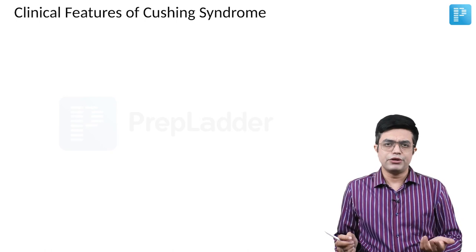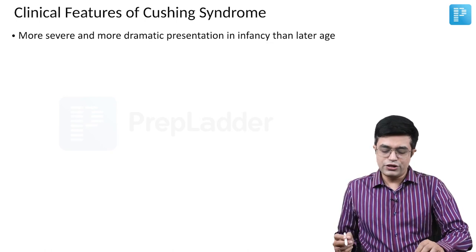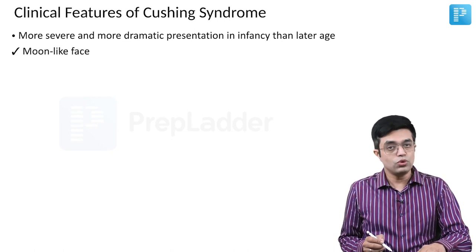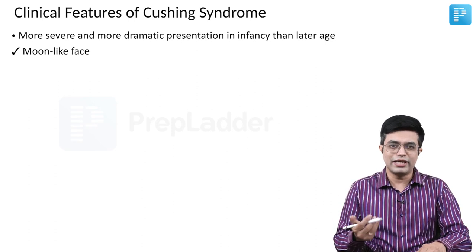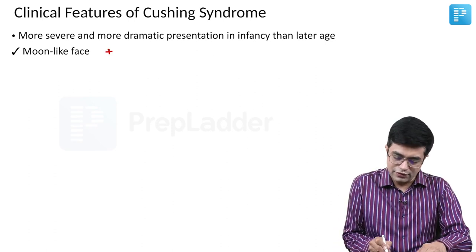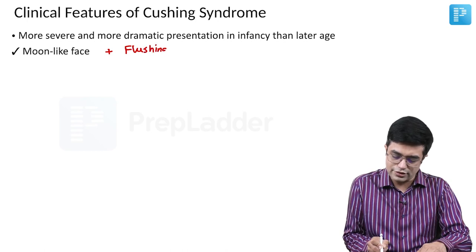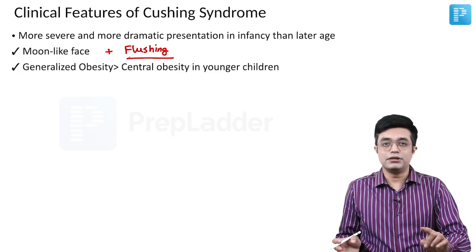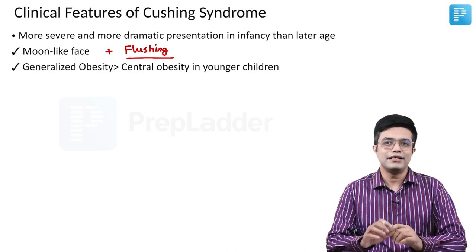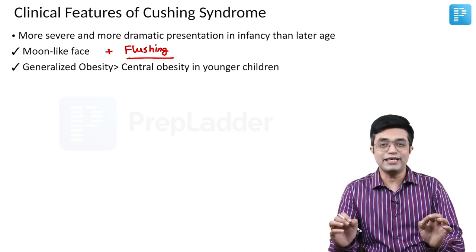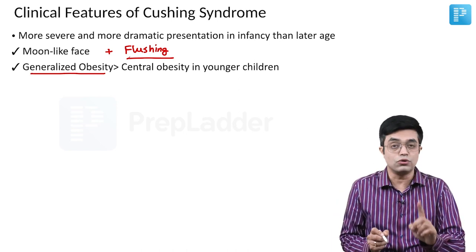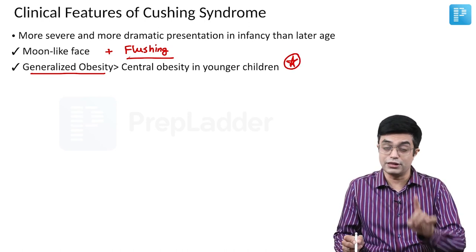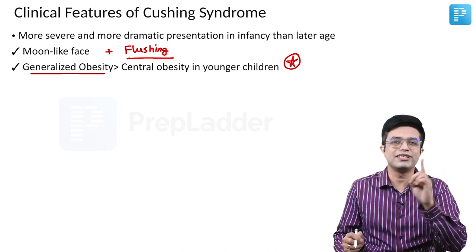The clinical features of Cushing syndrome are more severe and dramatic in infancy than at later ages. Features include a moon-like face with flushing, and obesity. Importantly, in young children — particularly in the first decade of life — generalized obesity is more common than central obesity, which is different from what adult textbooks describe. This is an important distinction in pediatrics.